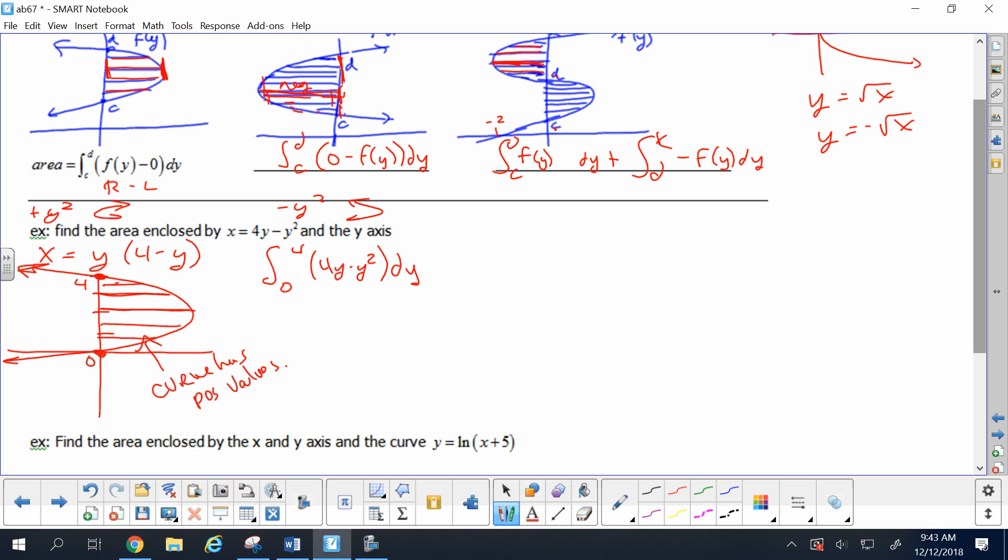The integration goes exactly like you would normally do. What's the anti-derivative of four y? Two y squared. What's the anti-derivative of y squared? Y cubed over three. If we put in four, we get two times sixteen, or thirty-two minus sixty-four-thirds minus zeroes. Common denominator is three, so ninety-six minus sixty-four-thirds is thirty-two-thirds. The answer better be positive because they ask for area.